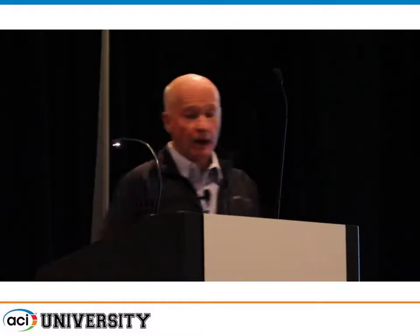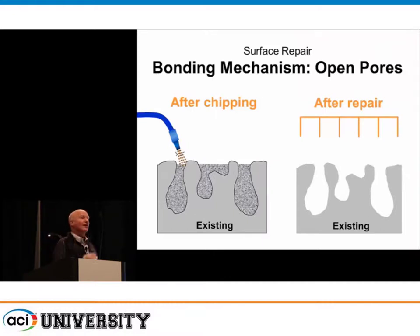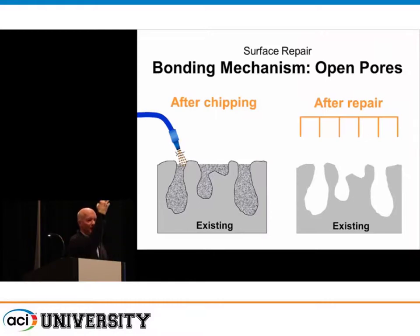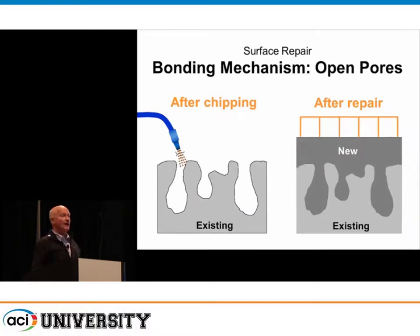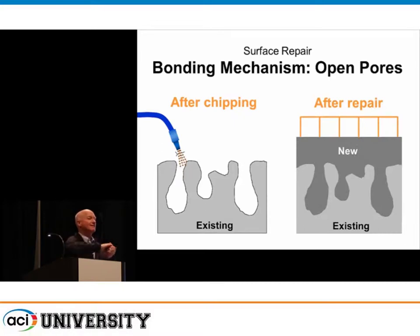Bond is obviously an important part of this — it's the connection between the new and the old. Our process: clean up the concrete, water blast it, remove dirt and debris from the pores. If you could look at it up close, you'd see these pores — pour water onto a clean surface and watch it being sucked down like a sponge into that pore structure. That's an awesome thing because you know you've got a good surface that will absorb the repair material. The repair material then gets sucked right into those pores. Bond is mechanical, not chemical — it's around the roughness, connecting the two together.